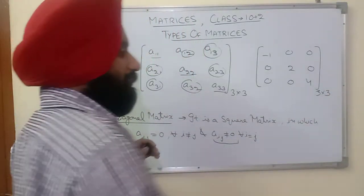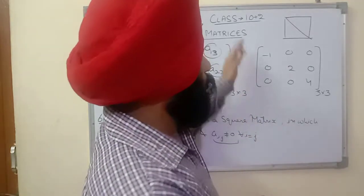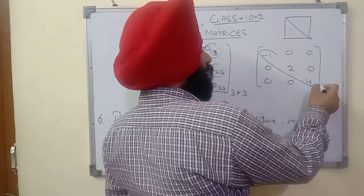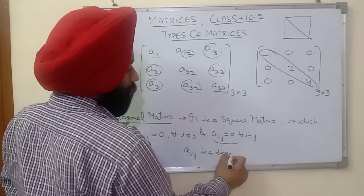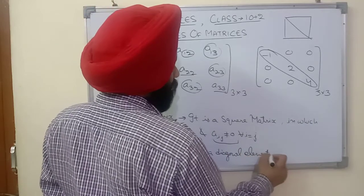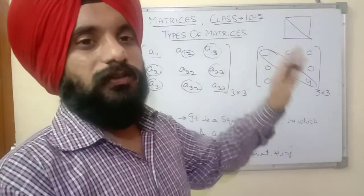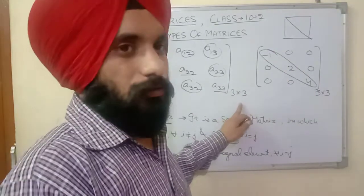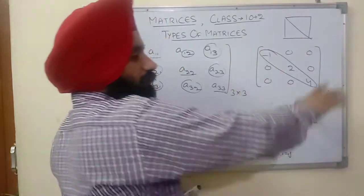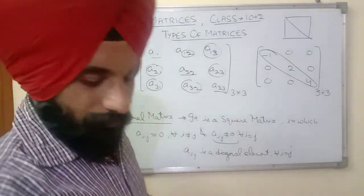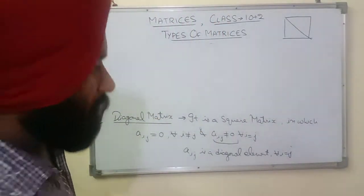This is a diagonal matrix. In a matrix, we consider only one diagonal — from top-left to bottom-right. The elements A11, A22, A33 (where i equals j) are known as diagonal elements. If the matrix is of order 4×4, then A44 is also a diagonal element. All elements where i and j have the same value are diagonal elements. If diagonal elements are non-zero and all others are zero, it is a diagonal matrix.